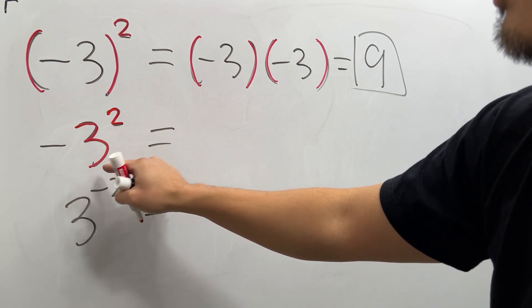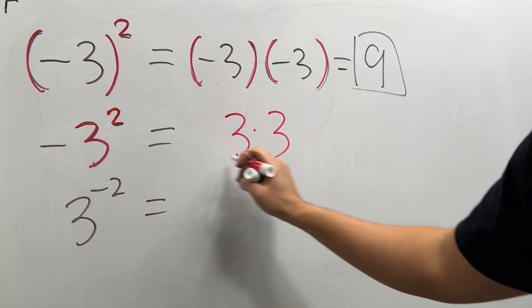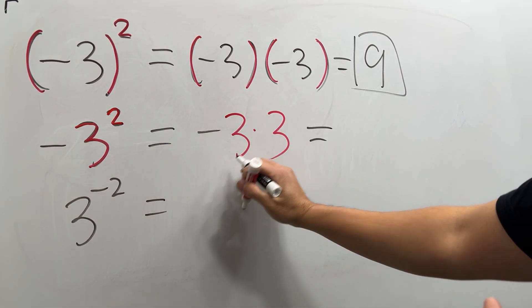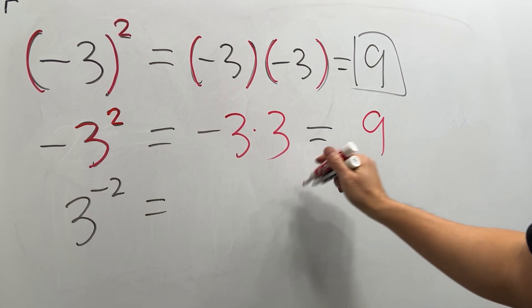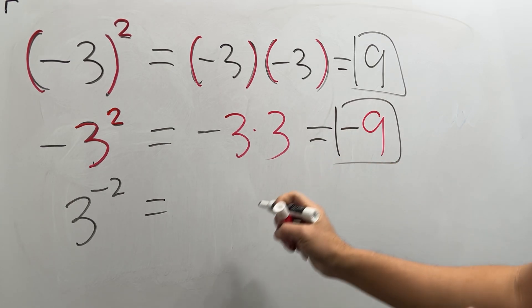So you write down this three twice: three times three. And then bring down negative one time only. Three times three is nine, and then the negative right here tells you have negative nine. All right.